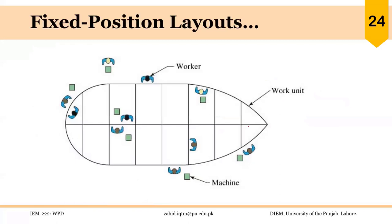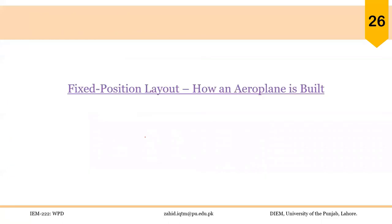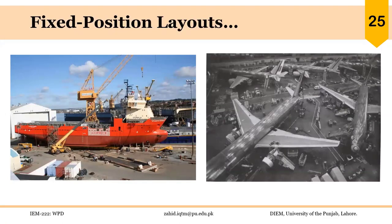Here is an example of building a large ship. The product is big, bulky, and huge, so the workers, labor, and equipment are brought to the site where the ship is being built — resources move toward the product that is fixed in position. Building large ships, aeroplanes, submarines, and construction projects are all examples of project processes that require fixed position layout.